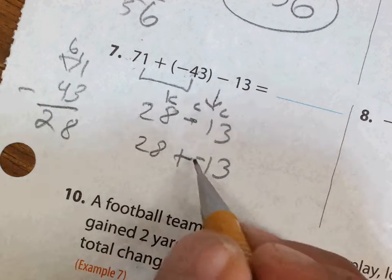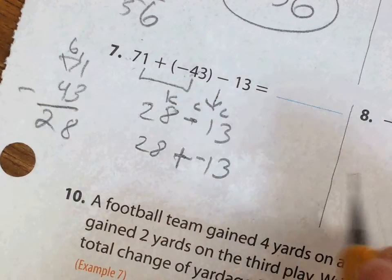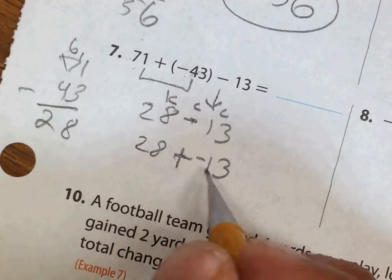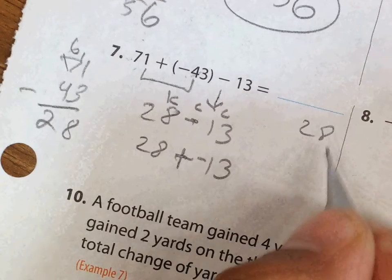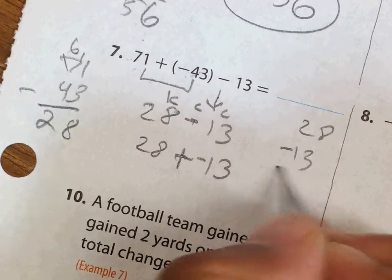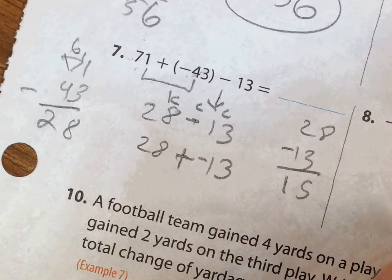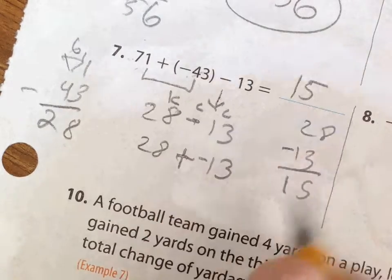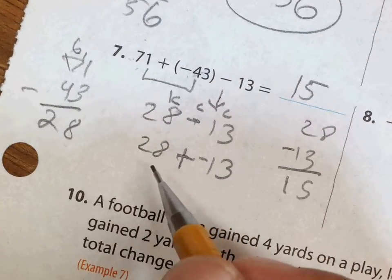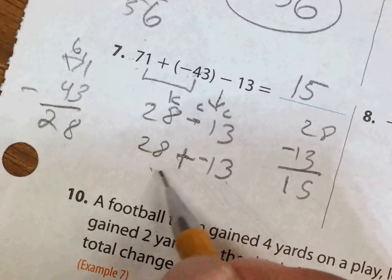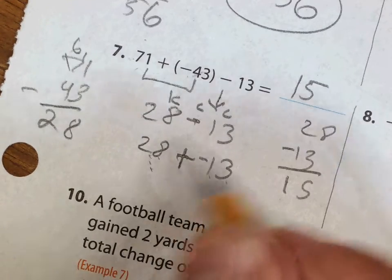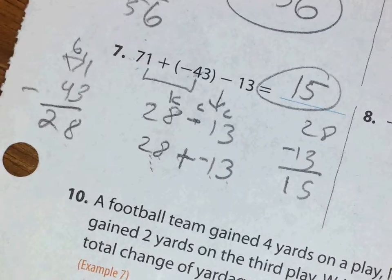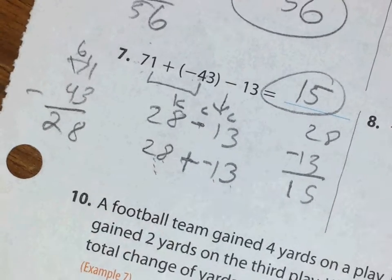And I have the same—again, the operation is addition. So I ask myself, same sign add, different signs subtract. There are different signs, so I'm gonna subtract, and I get 15. Is 15 positive or negative? Who is further away from 0? In other words, whose absolute value is more? I can tell the 28 is further away, so that's positive.